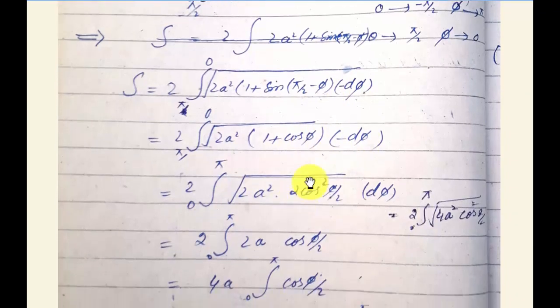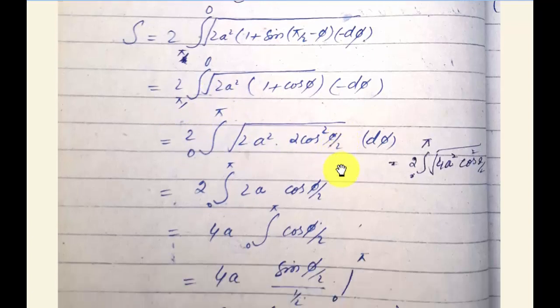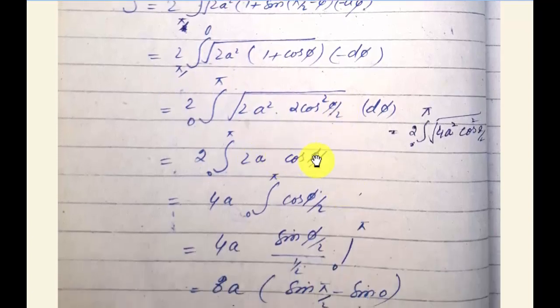When we change the limit to 0 to π, the minus sign appears. The minus from dφ multiplies with this, giving a plus. So the limit becomes 0 to π. Now do this integration and you get the answer.